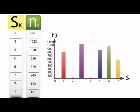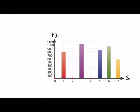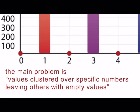When we draw H of R versus S of K, we sum all the results for each number. The main problem is values clustered over specific numbers, leaving others with empty values.